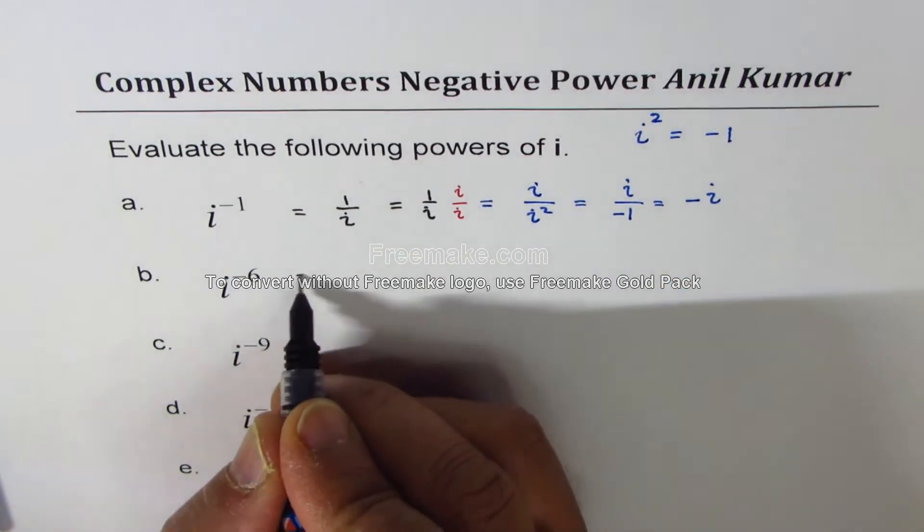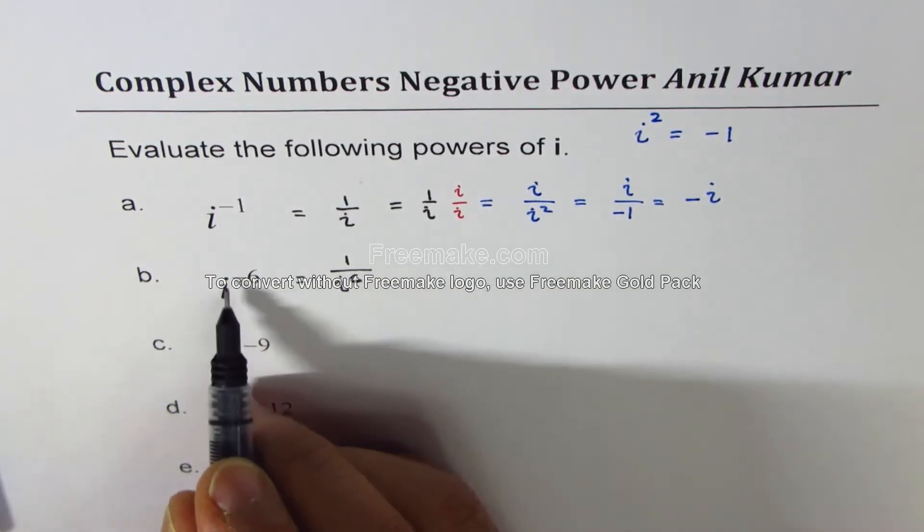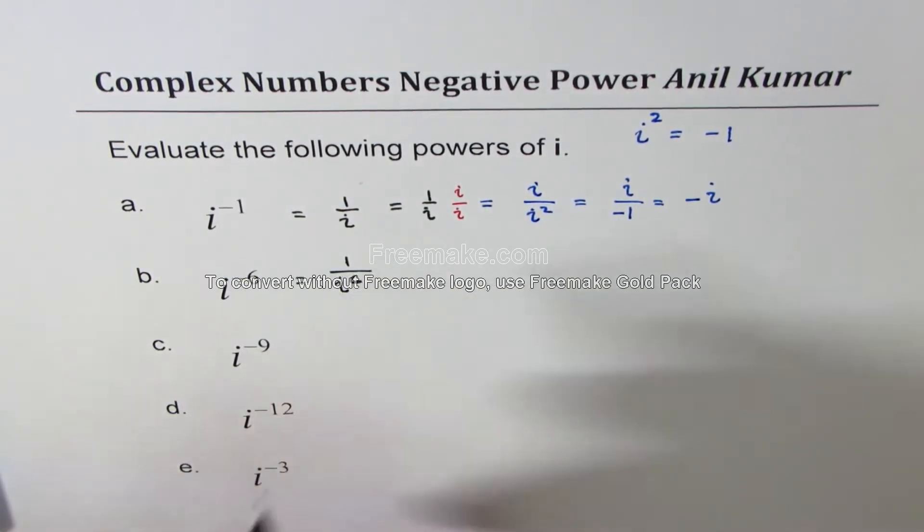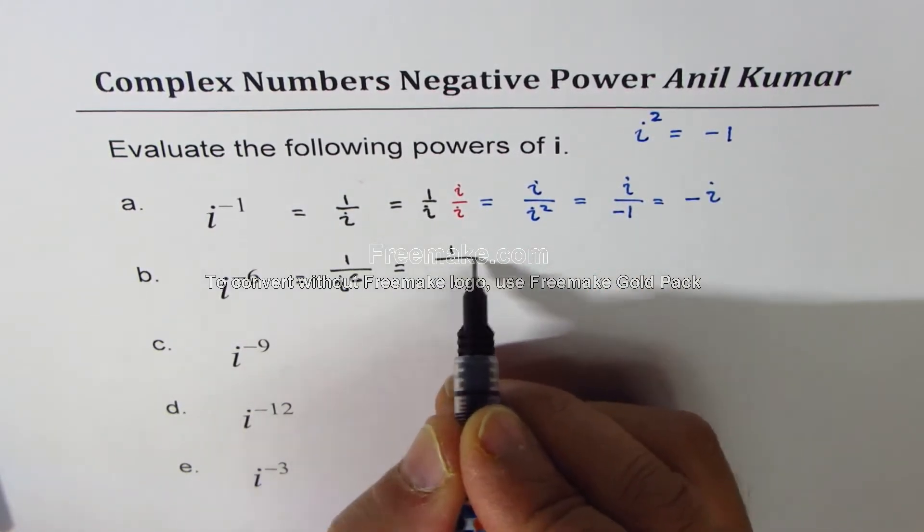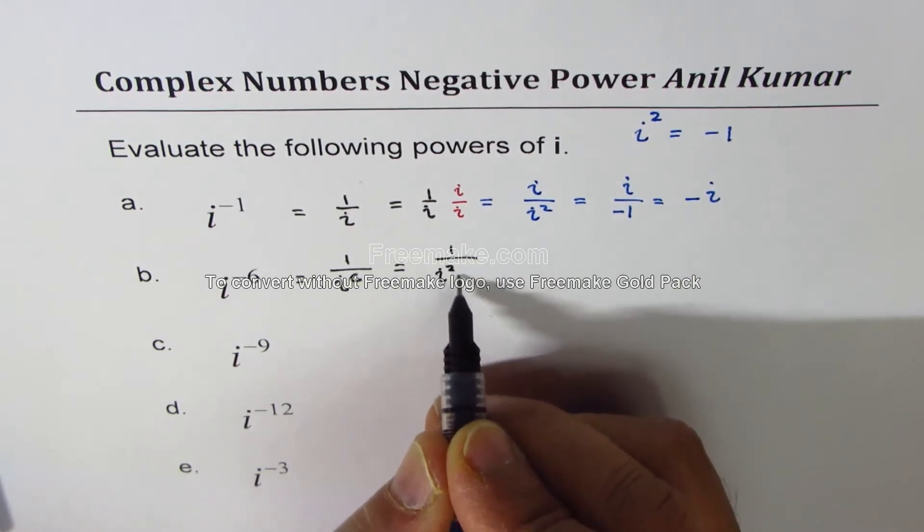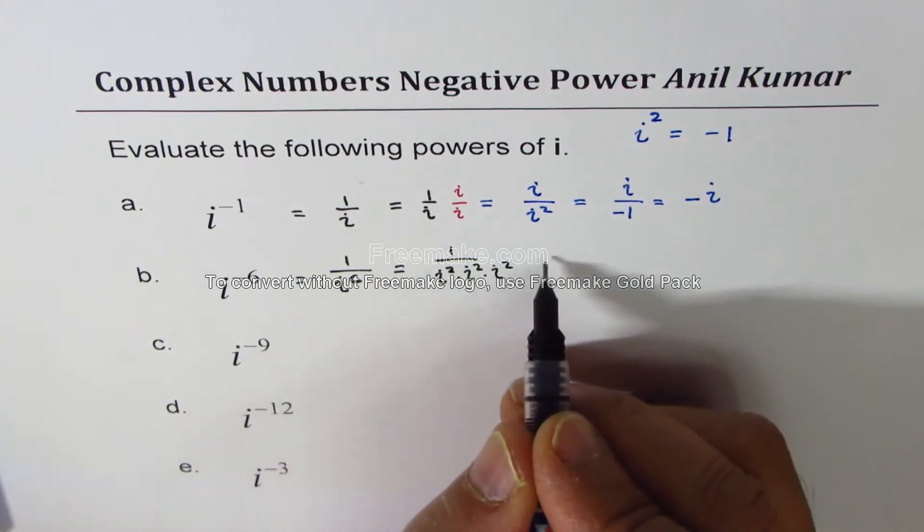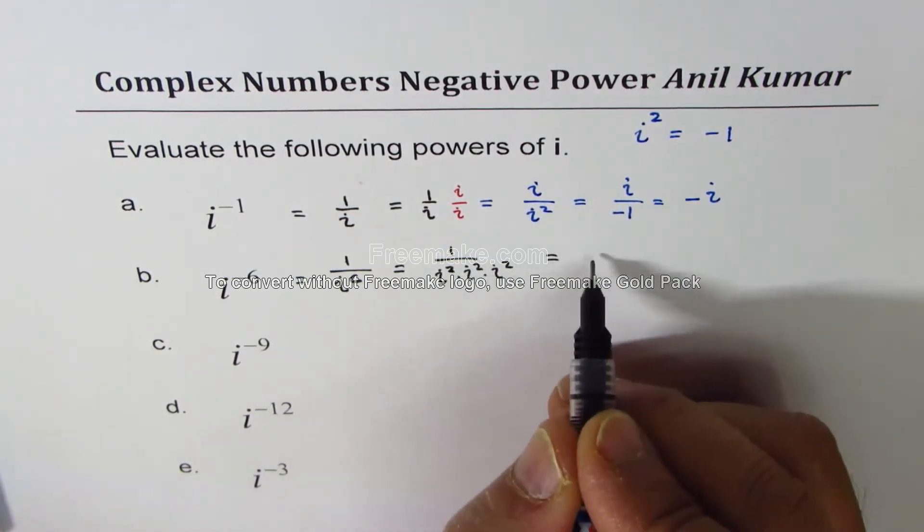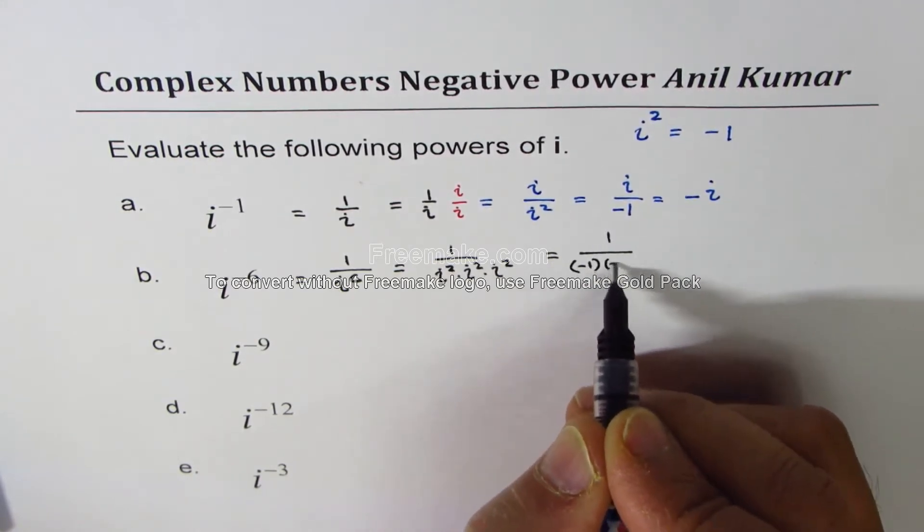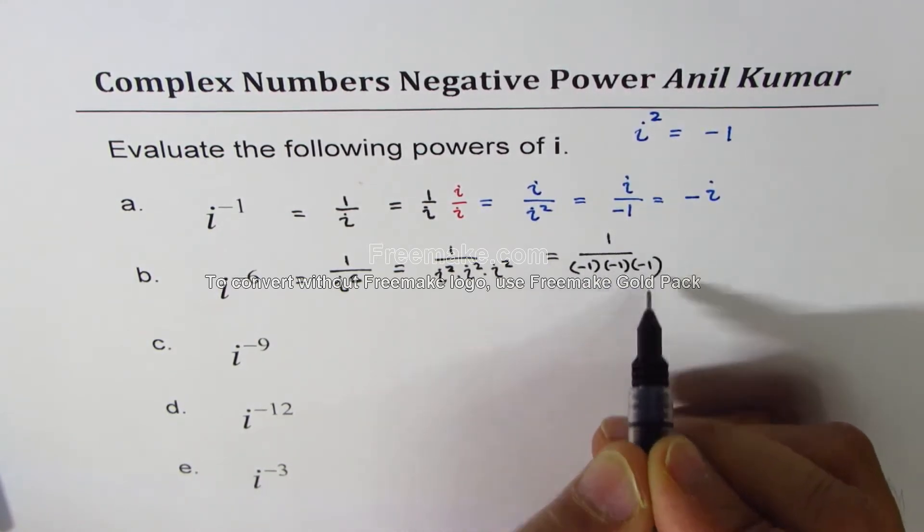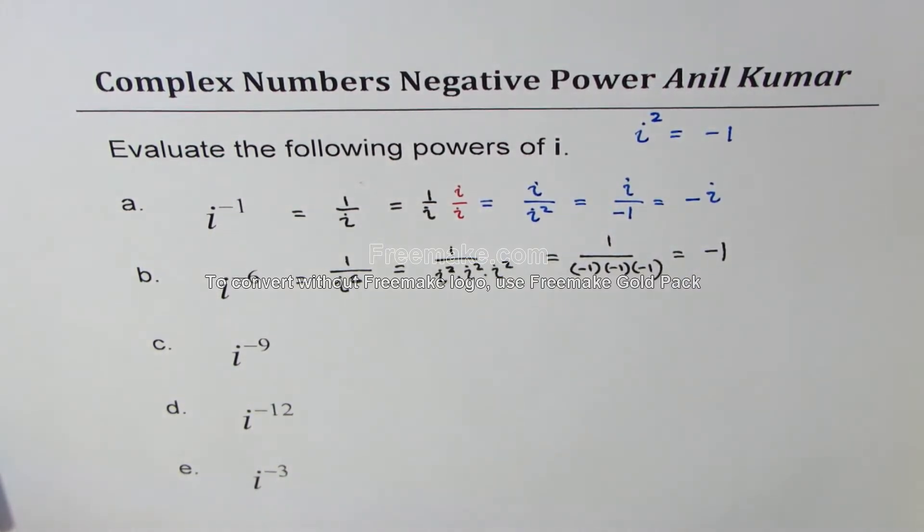Let's do the next one now, which is 1 over i to the power of 6. Minus 6 means reciprocal. Now we know i square is minus 1, so it's a good idea to write this as i square times i square times i square. You could do cube of this also. So which is basically 1 over minus 1 times minus 1 times minus 1, and that is indeed minus 1, so that is i to the power of minus 6.